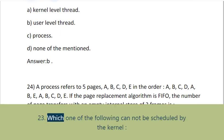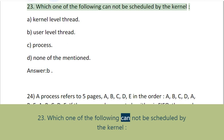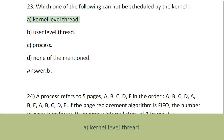Question 23: Which one of the following cannot be scheduled by the kernel? A. Kernel-level thread, B. User-level thread, C. Process, D. None of the mentioned. Answer: B.